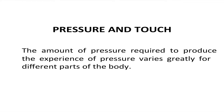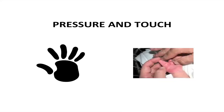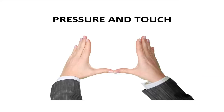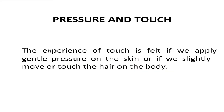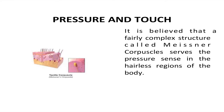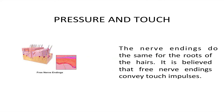Let us talk about pressure and touch. The amount of pressure required to produce the experience of pressure varies greatly for different parts of the body. The tip of the tongue, the tips of the fingers, and the hands are the more sensitive areas. The experience of touch is felt if we apply gentle pressure on the skin or if we slightly move or touch the hair on the body. It is believed that a fairly complex structure called Meissner's corpuscles serves the pressure sense in the hairless regions of the body.